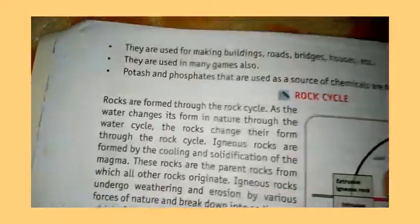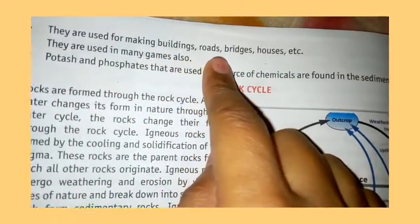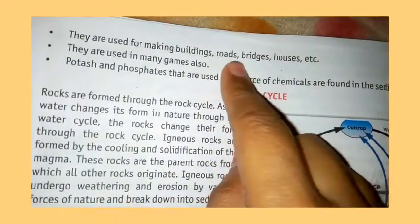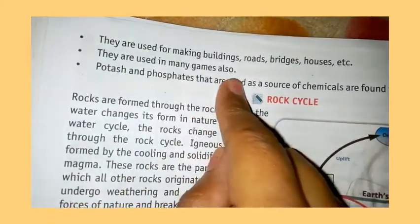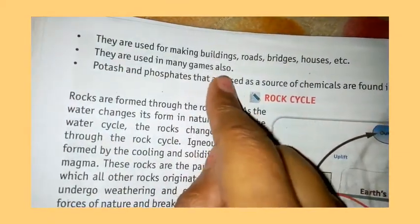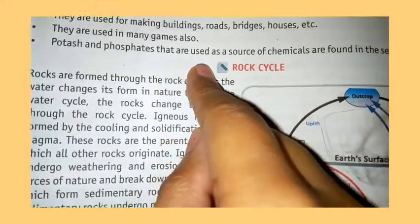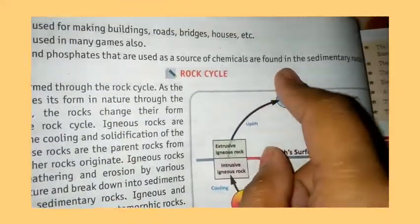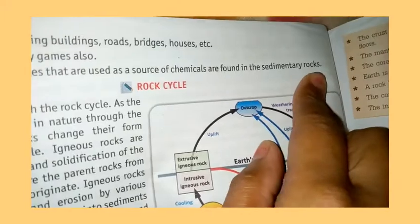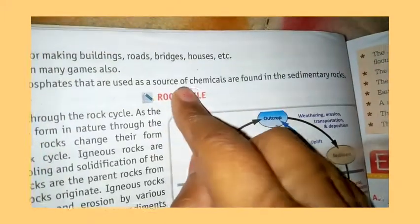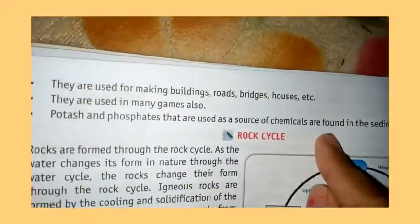Rocks are used for making buildings, roads, bridges, and houses. They are also useful for many gems. Potassium and phosphate are useful chemical resources found in sedimentary rock, and these chemicals are one of the important sources of minerals.